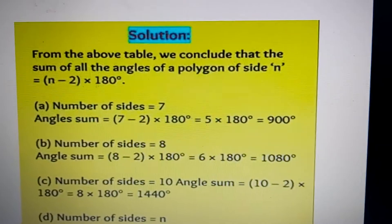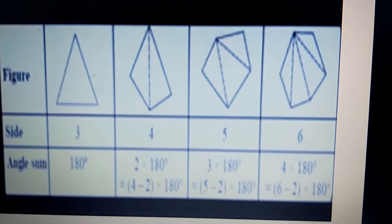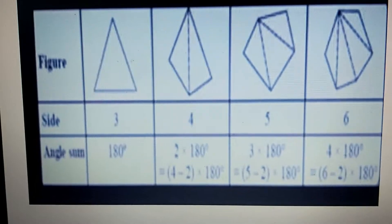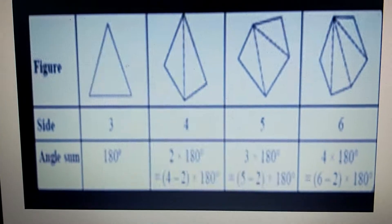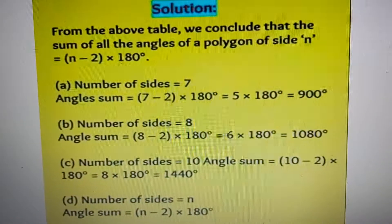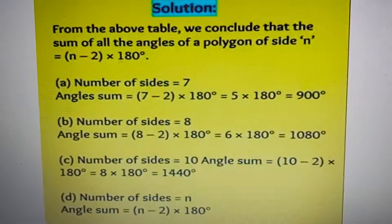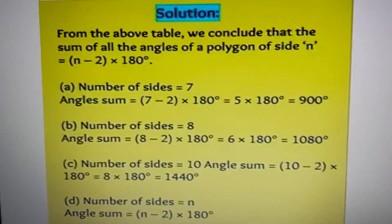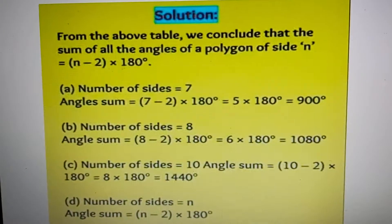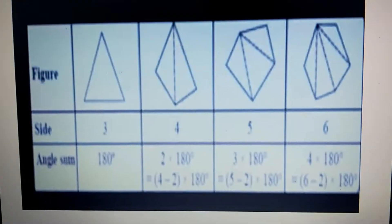Let's take an example. In the first figure, how many sides are there? Three sides. So we put the formula: N minus 2 into 180. In place of N we put 3. Three minus two is equal to one, so the answer will be 180 degrees.